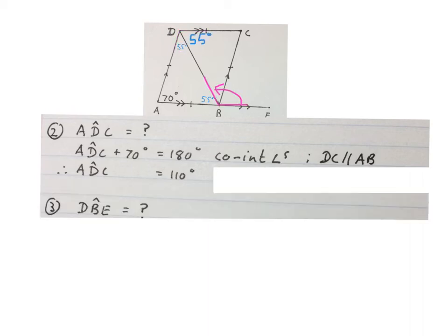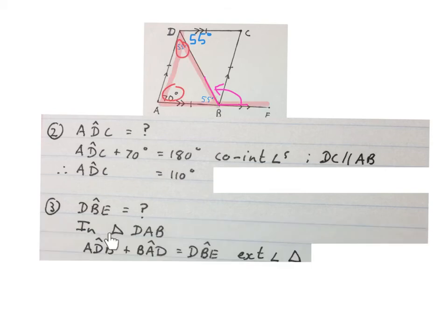Next they ask us to work out the size of angle DBE indicated over there. Again, there are a few ways to do it. Let's look at one. You may write: in triangle DAB, the red triangle there, angle ADB plus angle BAD is equal to angle DBE, exterior angles of a triangle.